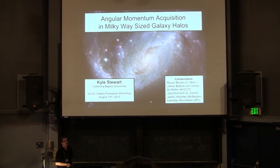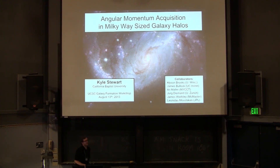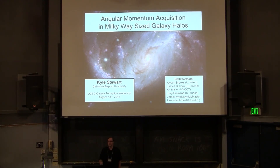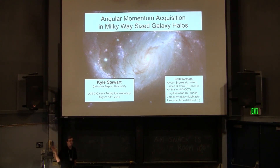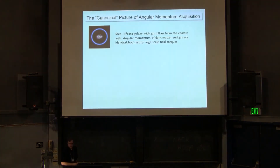I would like to talk about angular momentum acquisition in Milky Way-sized galaxy halos. I know this is the session on galaxies, but the operative word in my title is actually galaxy halos. I'm mostly going to be talking about how galaxies accrete material and gain angular momentum, tracking that from the virial radius down to near the galactic region, not really touching on what happens when it actually gets to the galaxy itself.